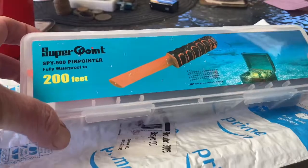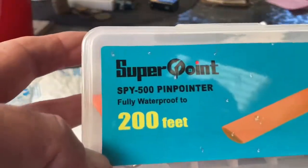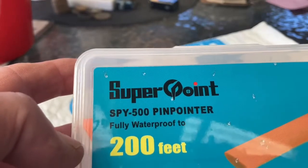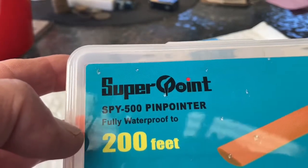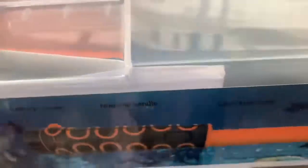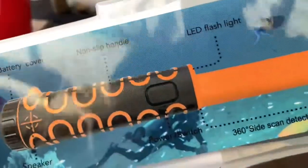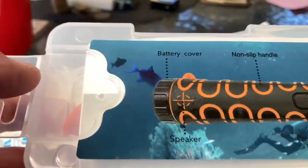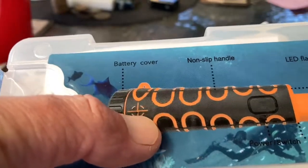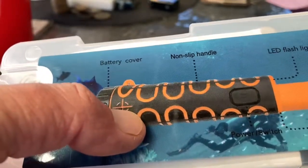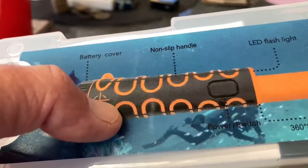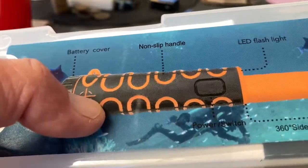Okay, so I've just taken that out of the packet and as you can see there, that's the brand. Fully waterproof to 200 feet, nice little cover that it's in. Yeah, non-slip handle, flashlight, pointed tip, 50 to 60 meters diving. Two kinds of battery covers, so that's pretty cool.